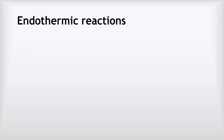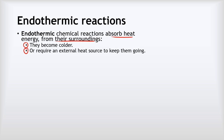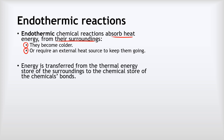So what about endothermic reactions? These are chemical reactions that absorb heat energy from their surroundings. We can identify endothermic reactions in one of two ways: either they become colder — some reactions done at room temperature will drop to around 10 degrees or even below zero — or, more commonly, they require an external heat source to keep them going. Most endothermic reactions simply won't take place at room temperature, so we have to heat them with a Bunsen burner or some other heat source. What's happening is that energy is transferred from the thermal energy store of the surroundings to the chemical store of the chemicals' bonds, and that's why the temperature goes down.